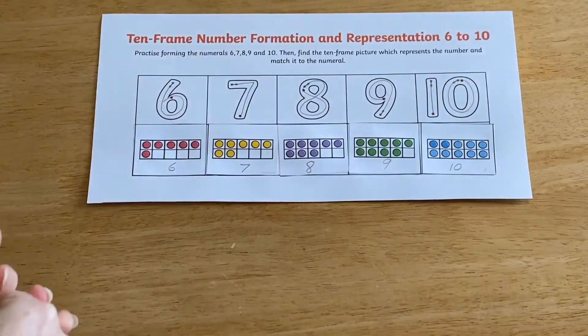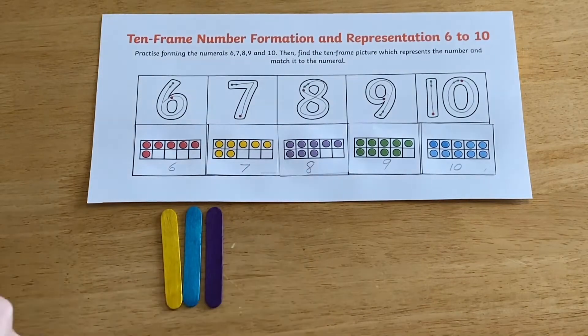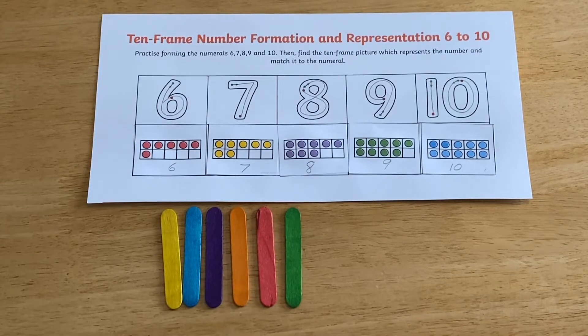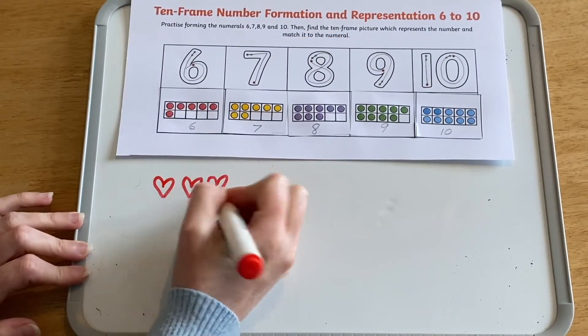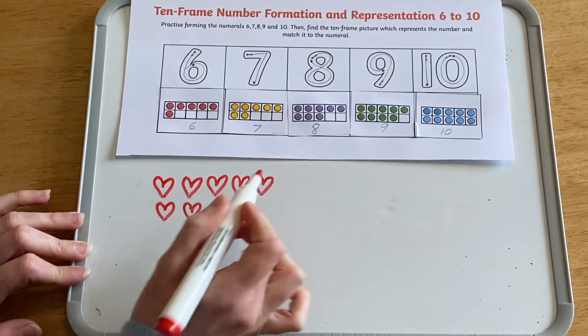For a follow-up activity, you could ask children to make number representations using any counting objects that you have to hand, such as buttons, counters, or small toys. Or using a whiteboard and pen or simply pencil and paper, you could ask children to draw a given number of items.